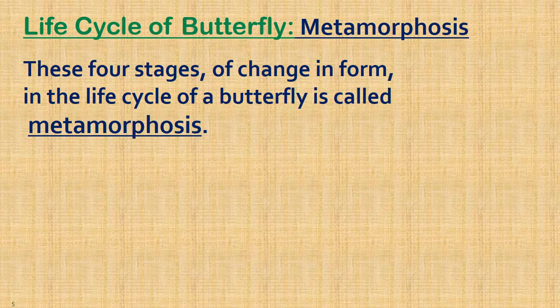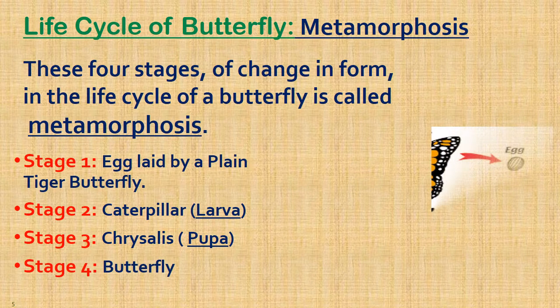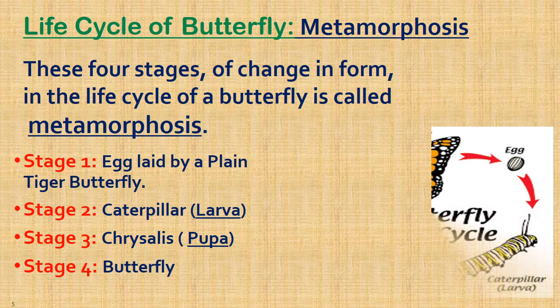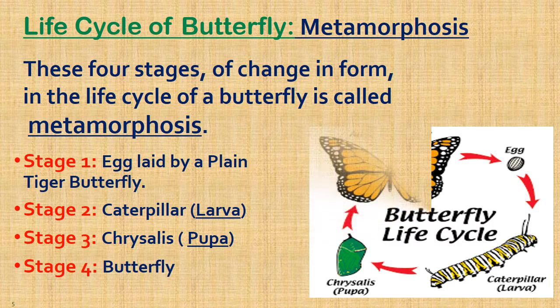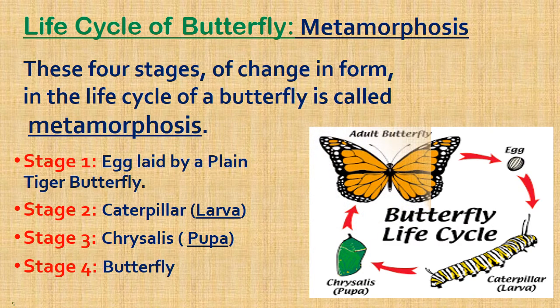You can notice the four stages in the life cycle of a butterfly. The young one grows into an adult animal which looks completely different. These four stages of change in form in the life cycle of a butterfly is called metamorphosis. The four stages are: the first stage — egg laid by a plain tiger butterfly; the second stage — the caterpillar or larva stage; the third stage — the chrysalis or pupa stage; and finally, the stage of an adult butterfly.